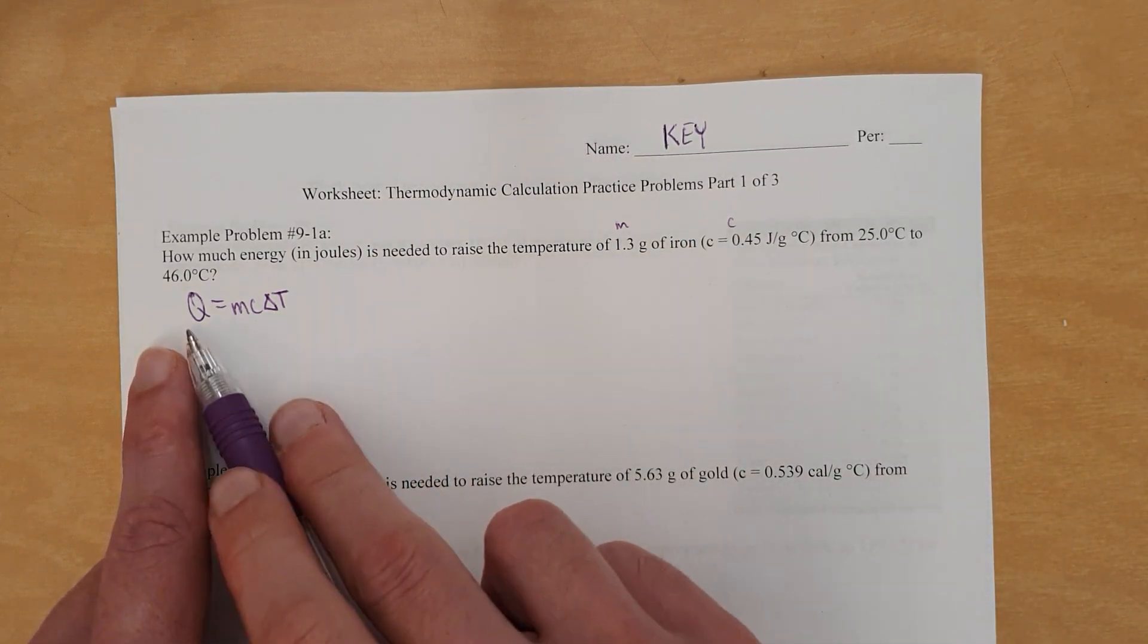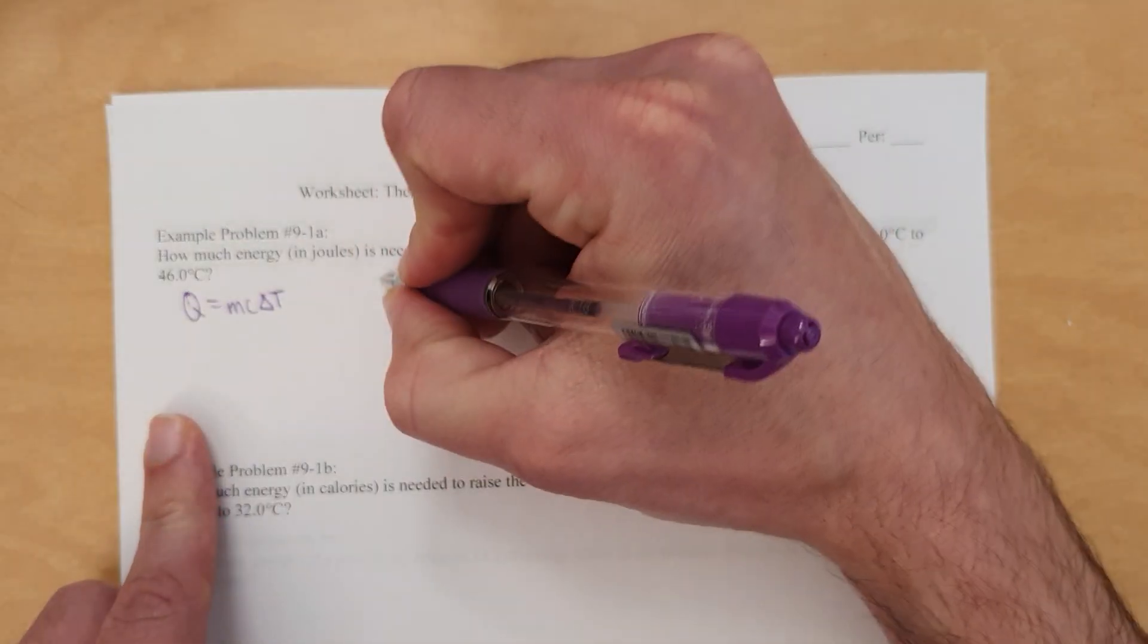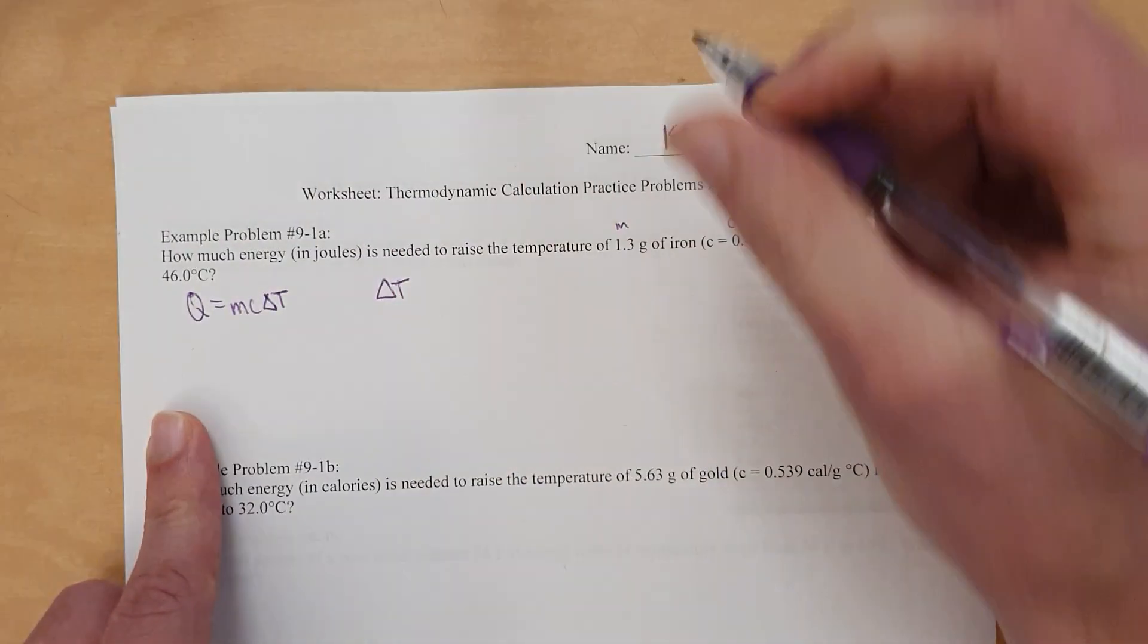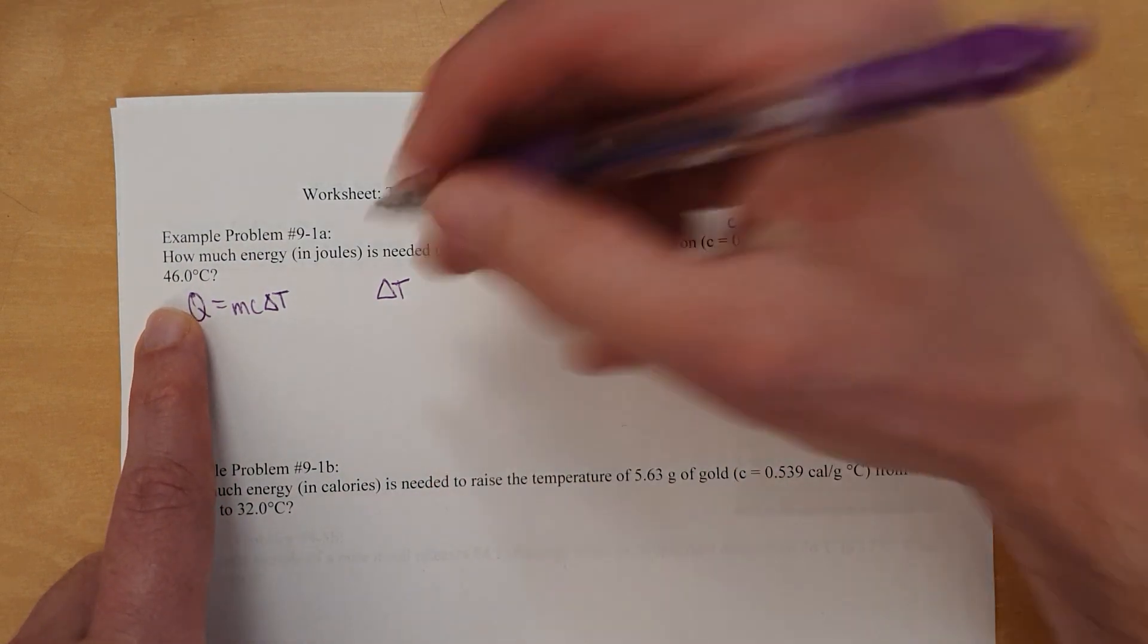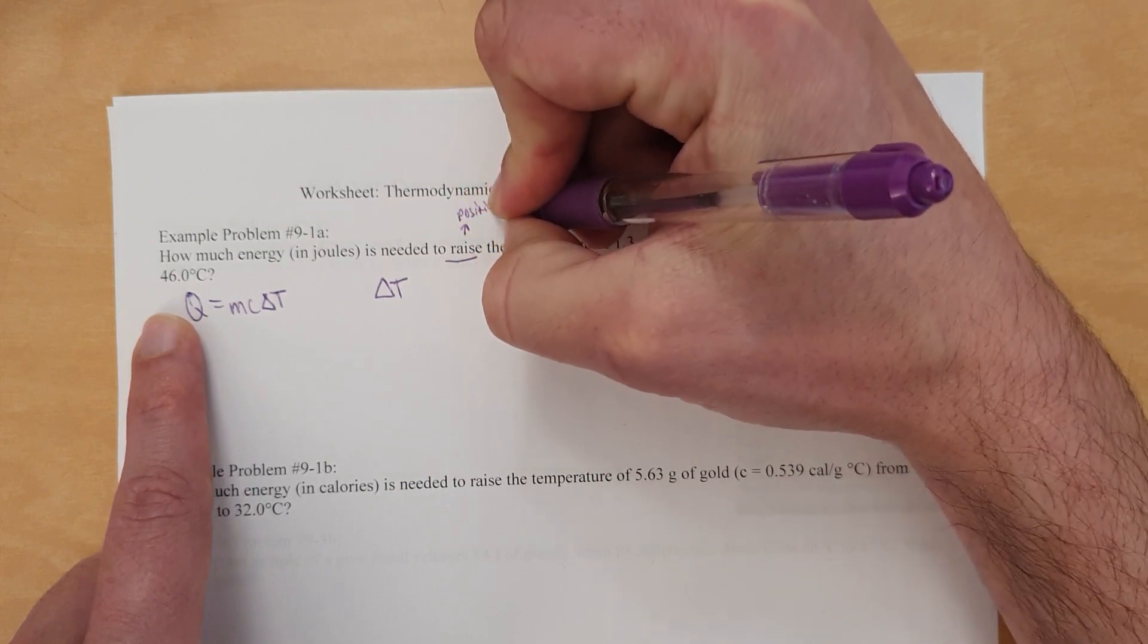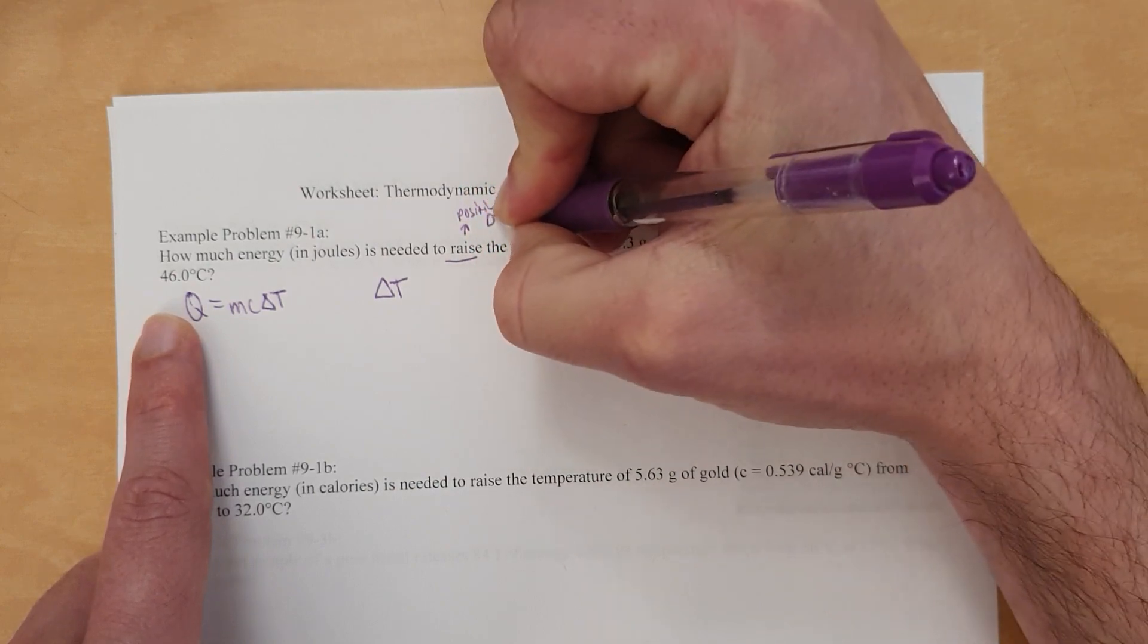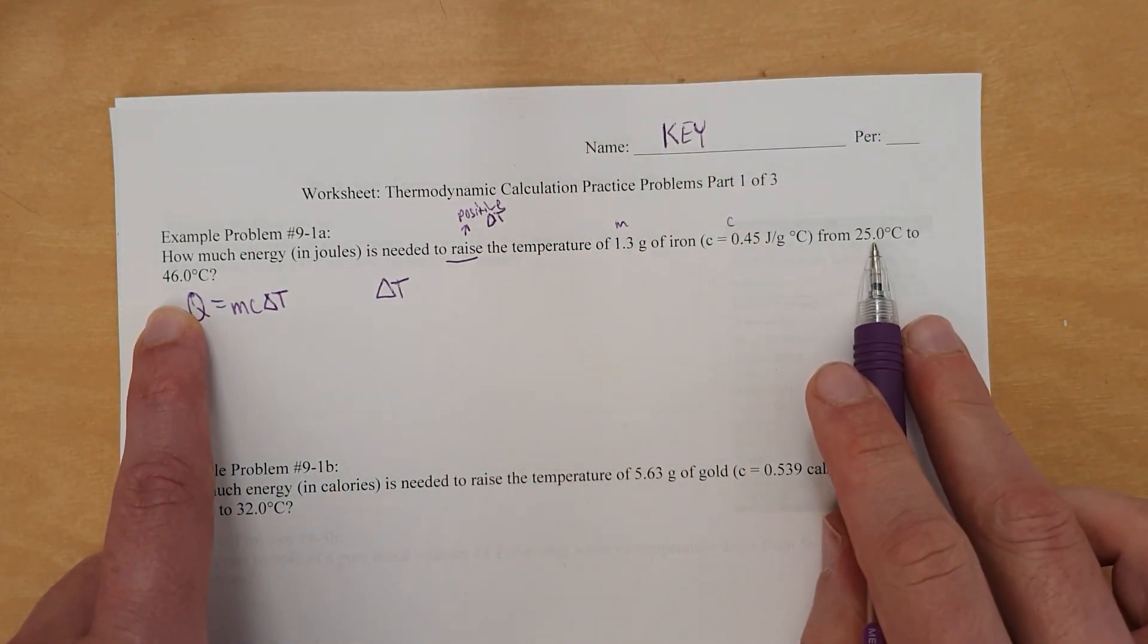So we need to show, always write this equation because it's where you're going to start with. You also need to figure out your delta T. Now, we need to make sure that delta T is positive. Why do we need to make sure it's positive? Because you're raising the temperature. This means positive delta T. Because if delta T is negative, that means the temperature goes down. So we need to show work for delta T.